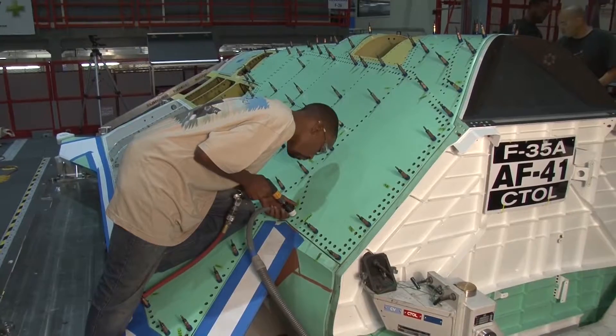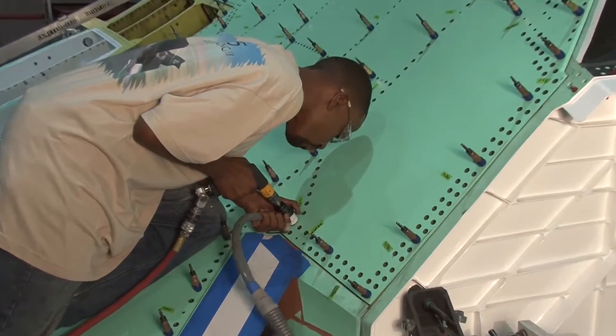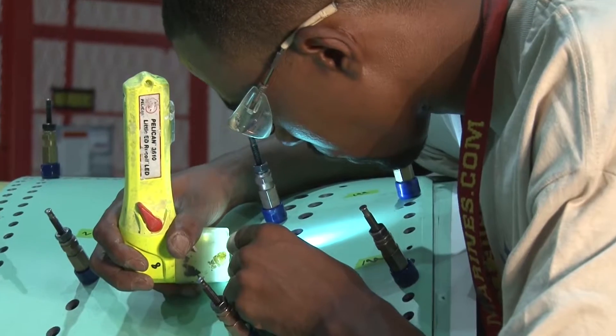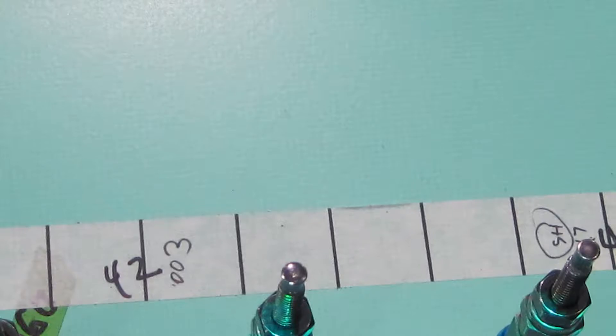In the manufacture of the F-35, we used tens of thousands of fasteners of several hundred different types to put the aircraft together. The traditional method of matching fasteners was to count the holes on a blueprint and mark the fastener with a sticky note or felt-tip marker.